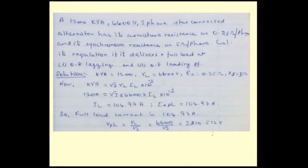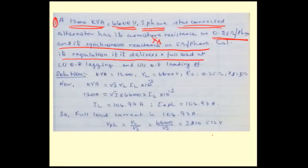Now consider a problem using the direct method. A 1200 kVA, 6600-volt, three-phase star-connected alternator has its armature resistance 0.25 ohm per phase and its synchronous reactance Xs as 5 ohm per phase. Calculate its regulation if it delivers at full load.